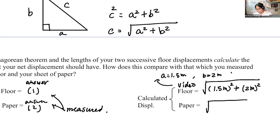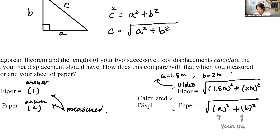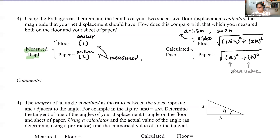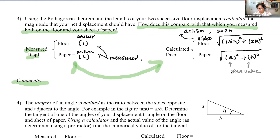For the paper, whatever conversion you decided on, plug in your A squared plus B squared values. Then compare these two calculated values. After writing the values, answer in the comments: how does this compare with what you measured both on the floor and on the sheet of paper? That's number three.